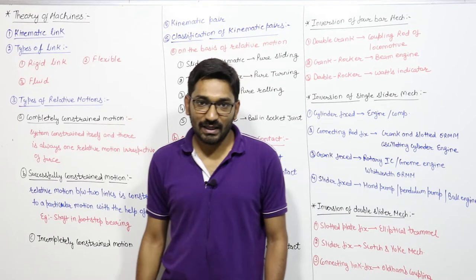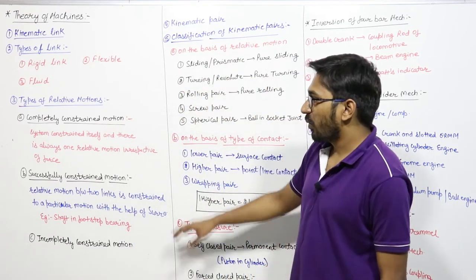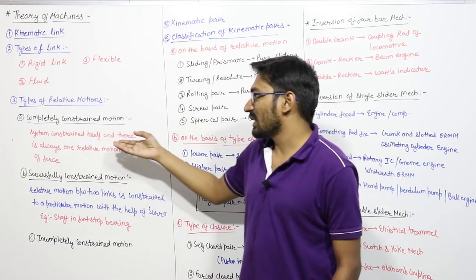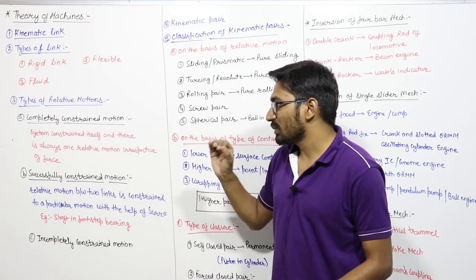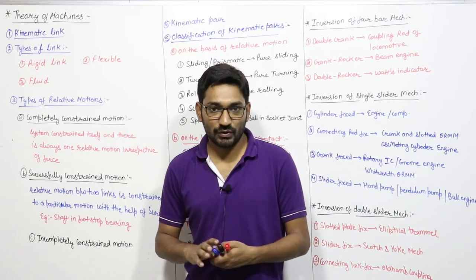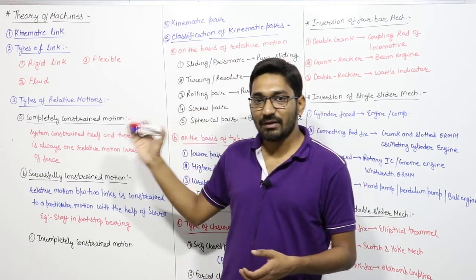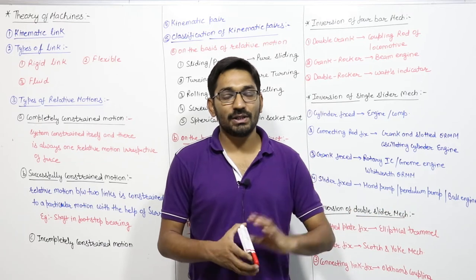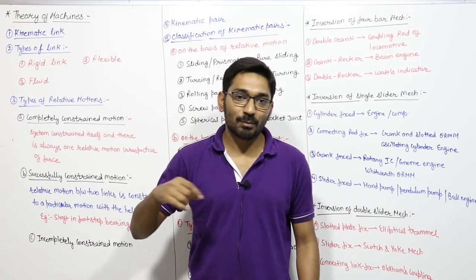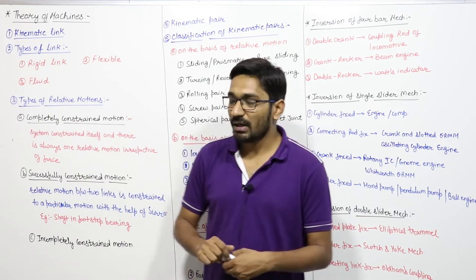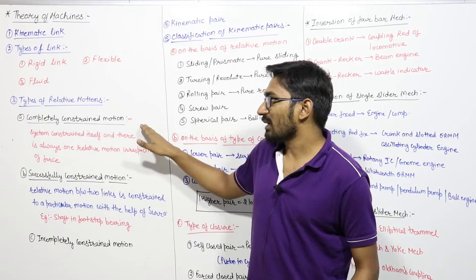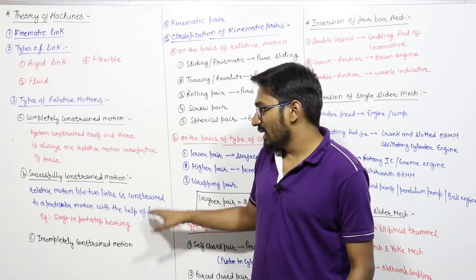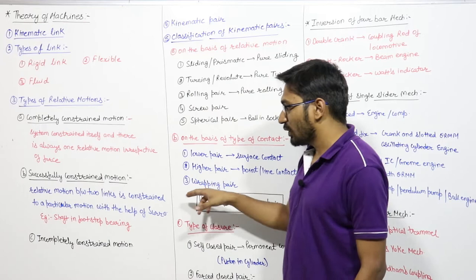There are three types of relative motions between links. First is completely constrained motion — the system is constrained itself and there is always one specific relative motion irrespective of the applied force or direction. No matter what load you apply in any direction, you will get a specific output; that motion is known as completely constrained motion.